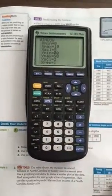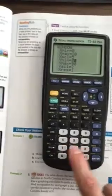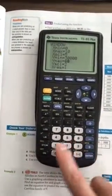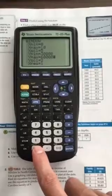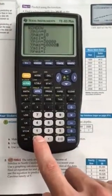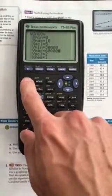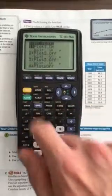Y min, we want it to go from, let's say, 30,000 to 60,000. And so now our window is set up. And then we'll go to stat plot, so second Y= to go to our stat plot.